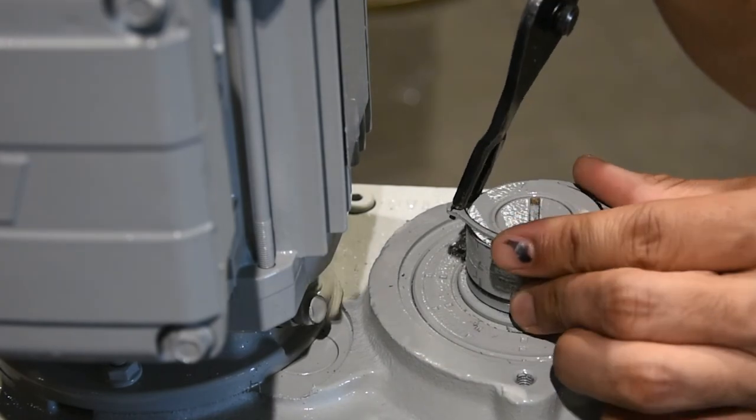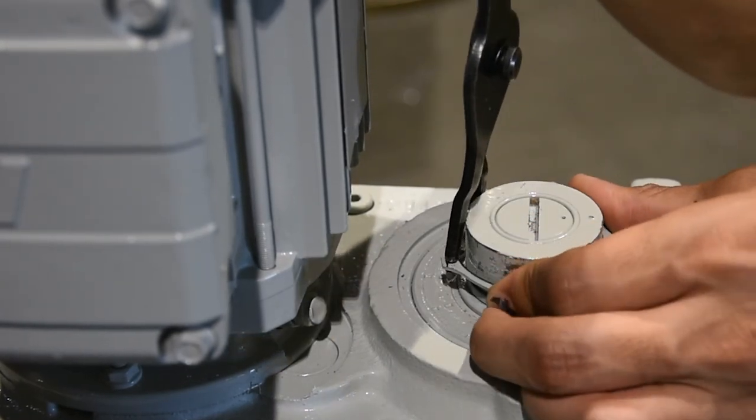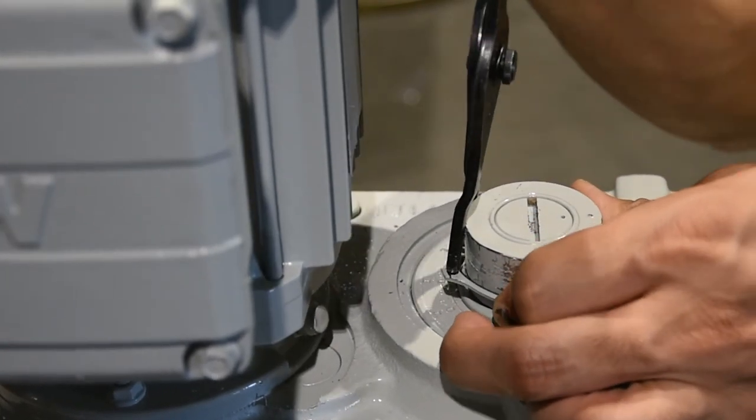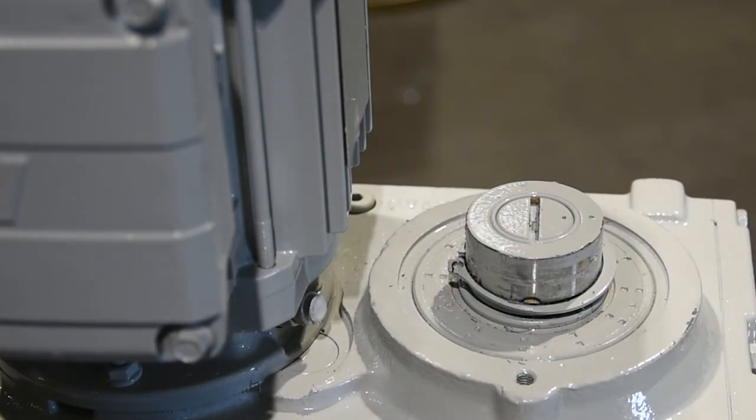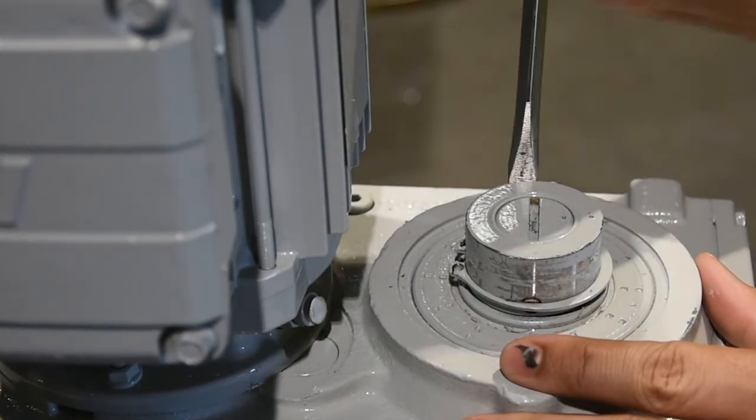Slide the snap ring back into the groove to secure the shear pin. The screwdriver can be used to gently tap the ring into place.